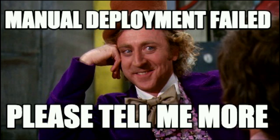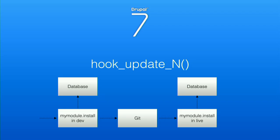So we invented something that will prevent us from having to do new stuff multiple times and reduce margin of error. The first thing we could think of was hook_update_N process. Who is using that? A lot of people — awesome. So we use some custom module and any time we want to deploy something, we write a new hook_update_N, push it, pull it. But it's time consuming and we don't have too much time.